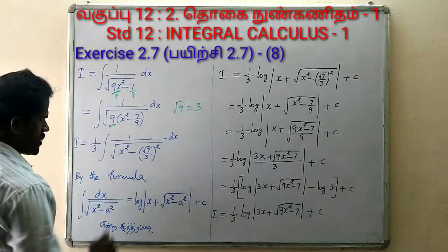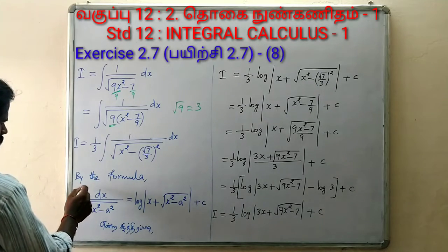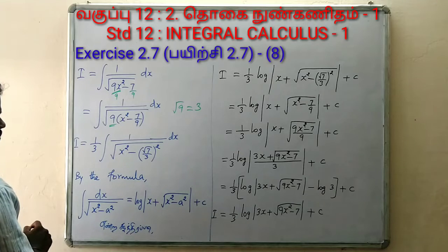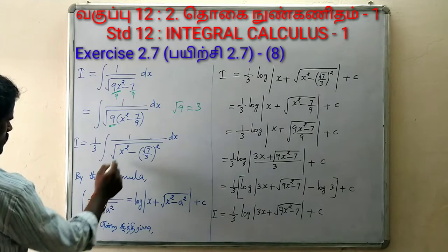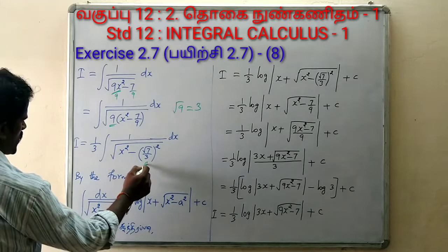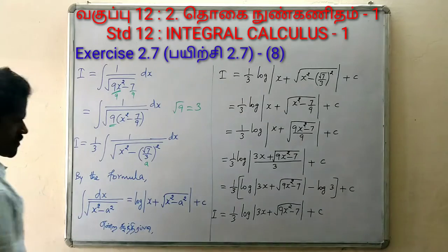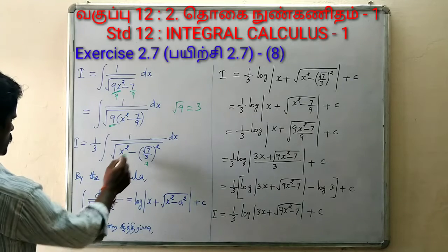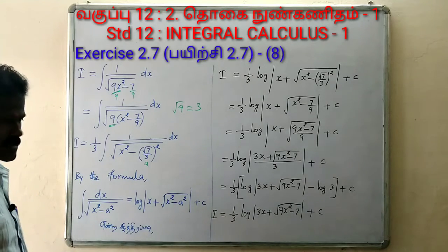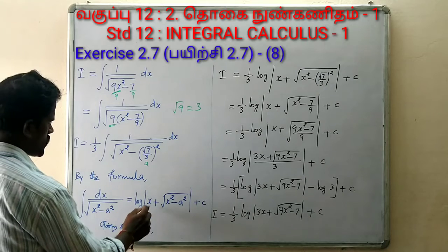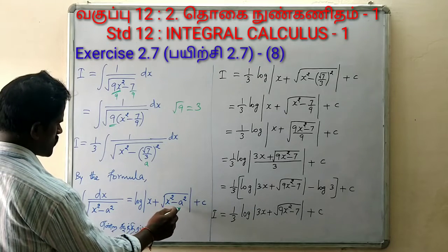Now if you have this structure, you can compare it to the standard format: integral of dx by root of (x² minus a²). This is the standard format. So comparing left and right, the right-hand side gives log of x plus square root of (x² minus a²).